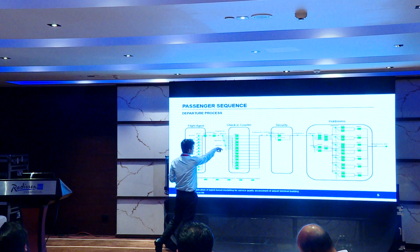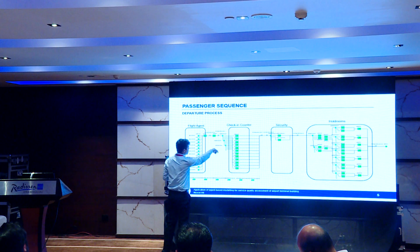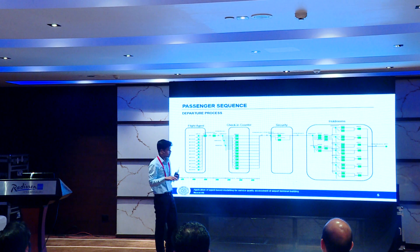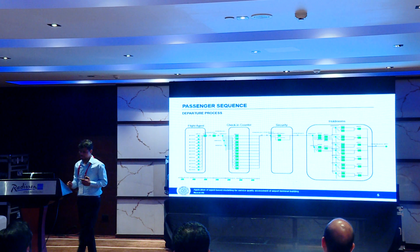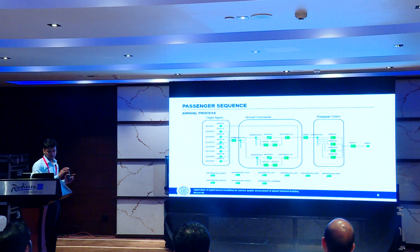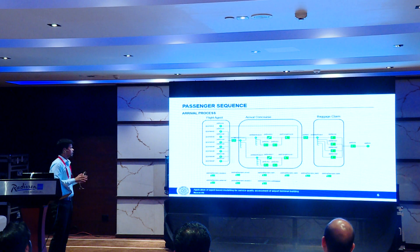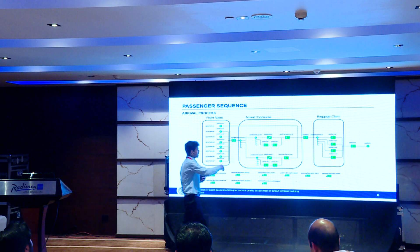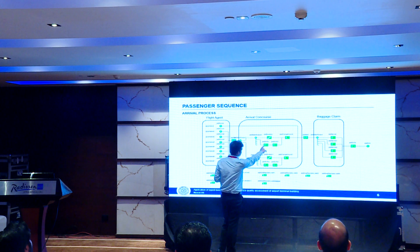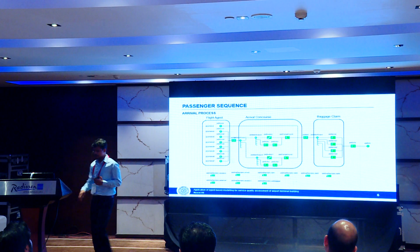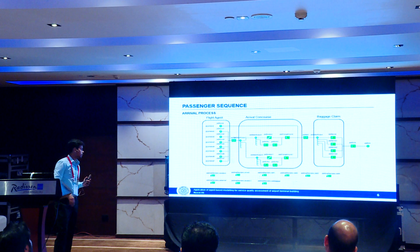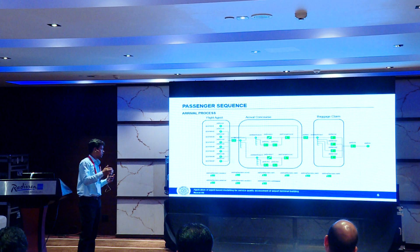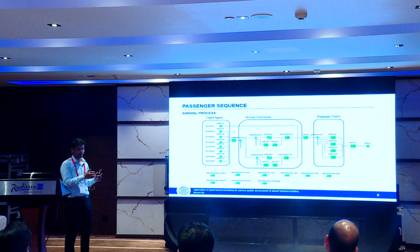A rectangular decision block determines which check-in counter a passenger has to go to, and further passengers proceed to security. For the arrival process, it is similar to the departure process — the only difference is that for level changes, passengers use either escalators or stairs. The pad area descriptor in the flow diagram records density and how much time a passenger is spending in a particular zone.